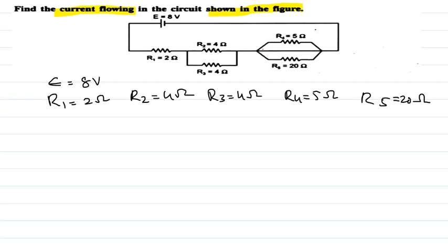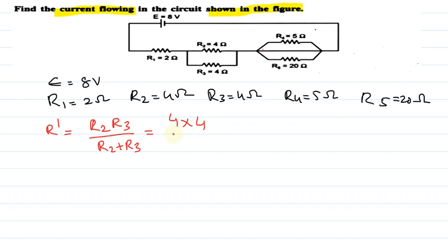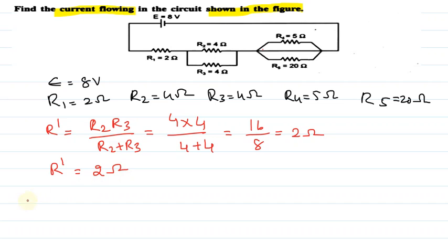First, let us find out the effective or equivalent resistance between R2 and R3. Let us represent that as R'. R' is equals to R2 × R3 upon R2 + R3, that is 4 into 4 upon 4 plus 4, this is equals to 16 upon 8, that is equals to 2 ohms. So the equivalent resistance R' is 2 ohms.